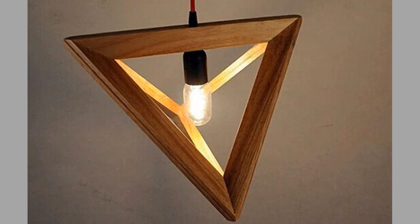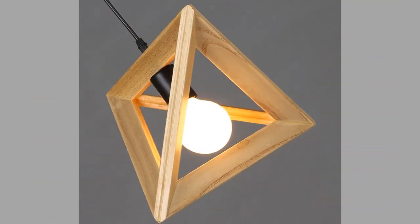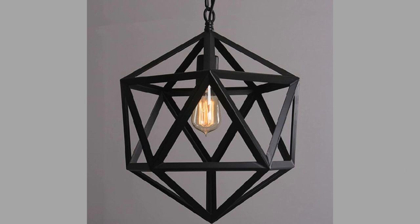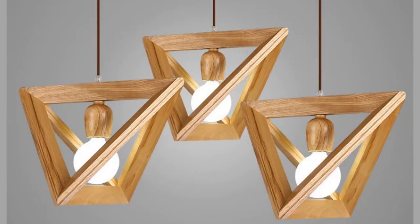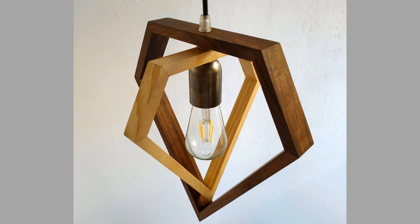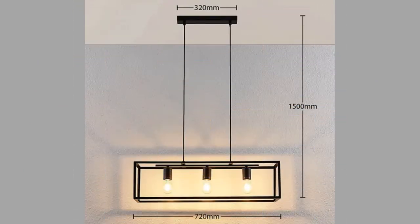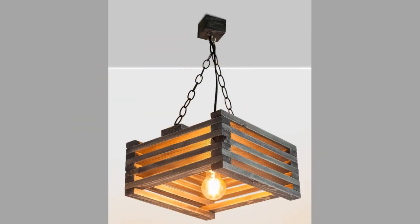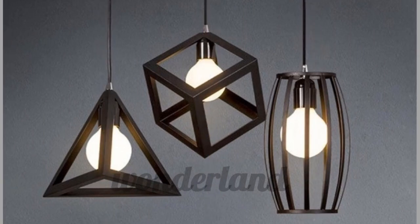If we could choose only one word to describe pendant lighting, it would have to be versatile. Not only do pendant lights come in all the shapes, colors, and styles to fit your particular design aesthetic, but they can be used to serve the three main lighting functions found in well-lit homes: general, accent, and task lighting. You can use them just about anywhere.